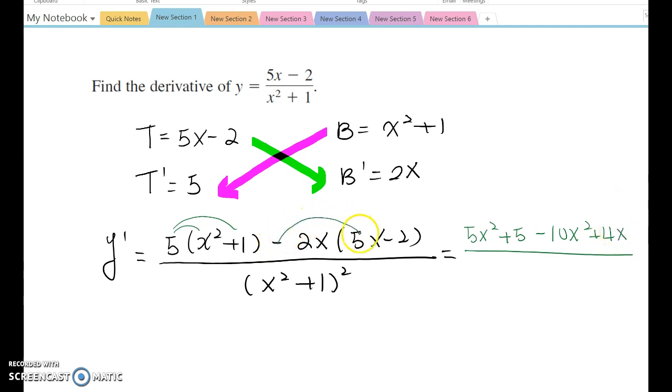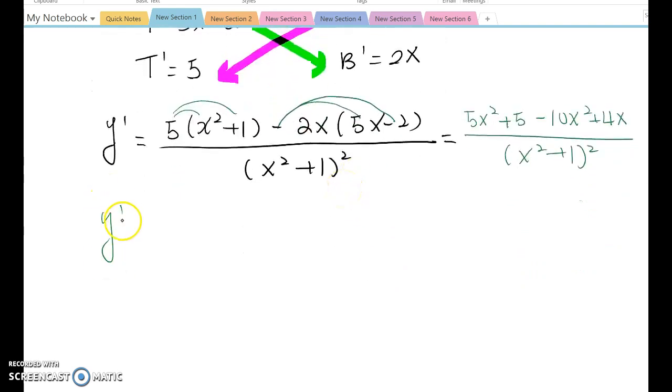Be careful: negative times positive, negative times negative. And then x squared plus 1 squared. Then y prime equals, combining like terms—as you see, these are like terms—so the total becomes negative 5x squared. And only the x term here, so copy down plus 4x. And that's the only number, so plus 5, over x squared plus 1 squared.